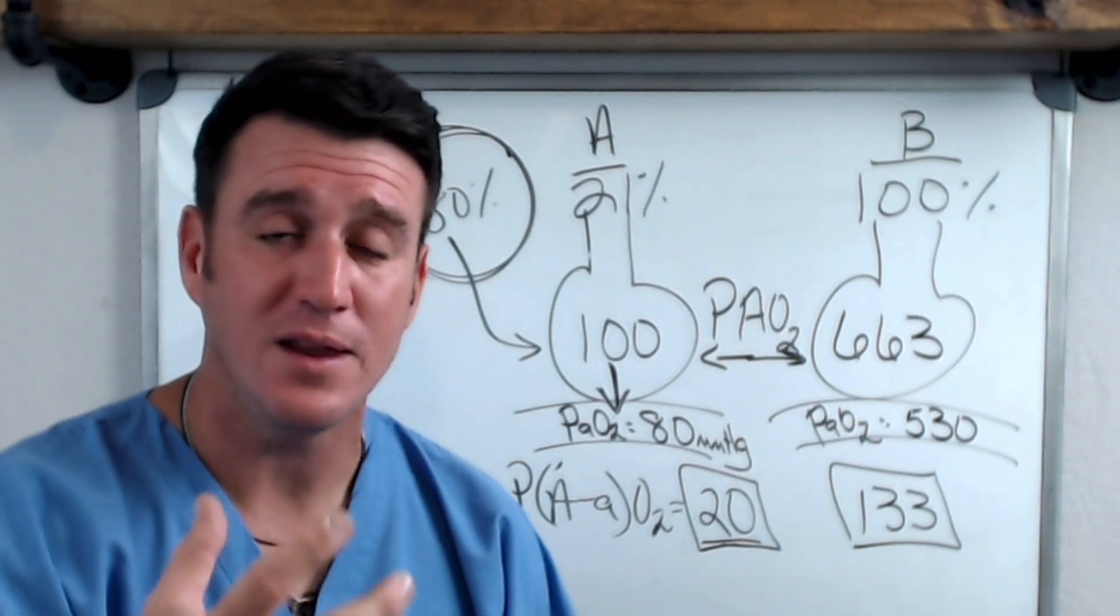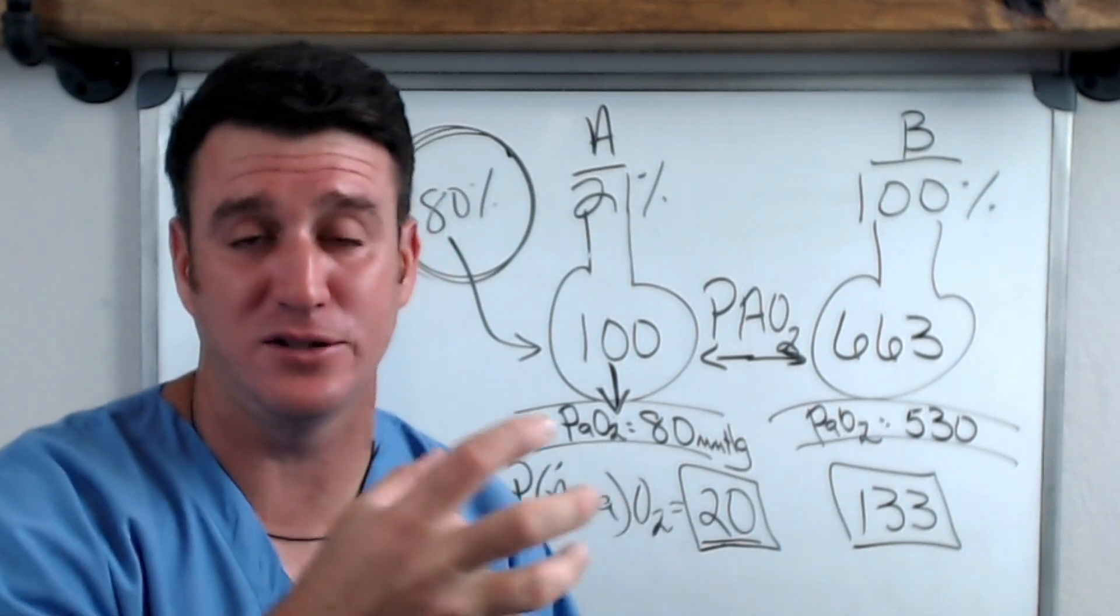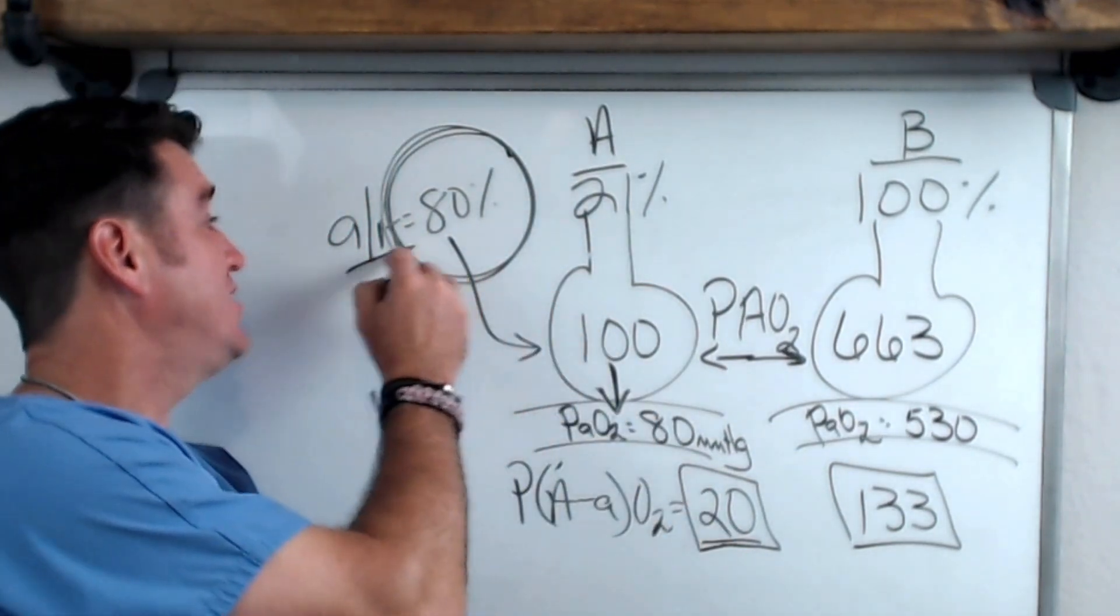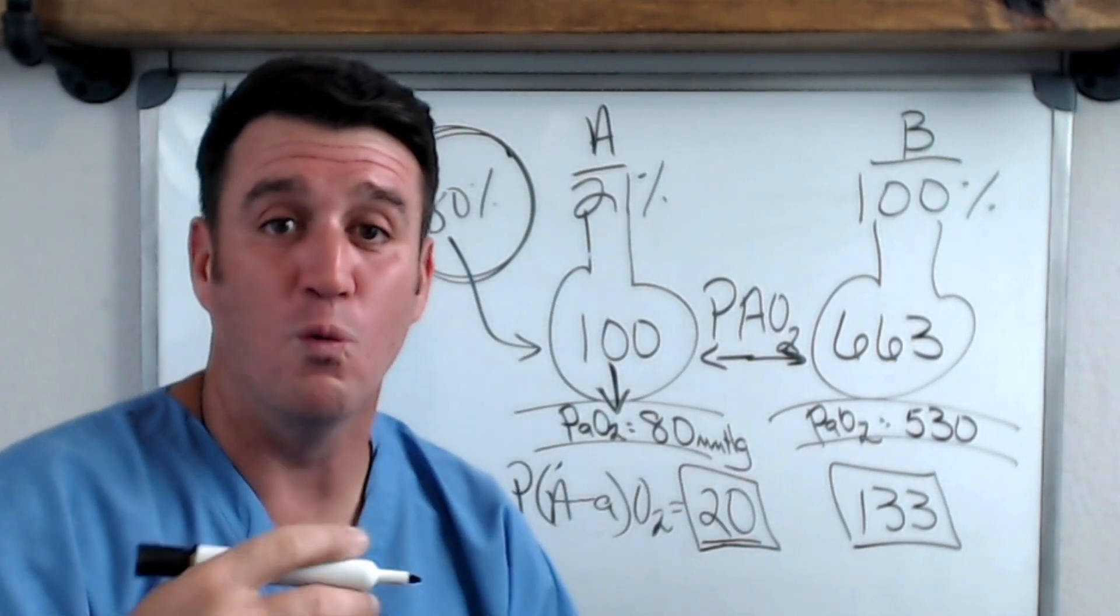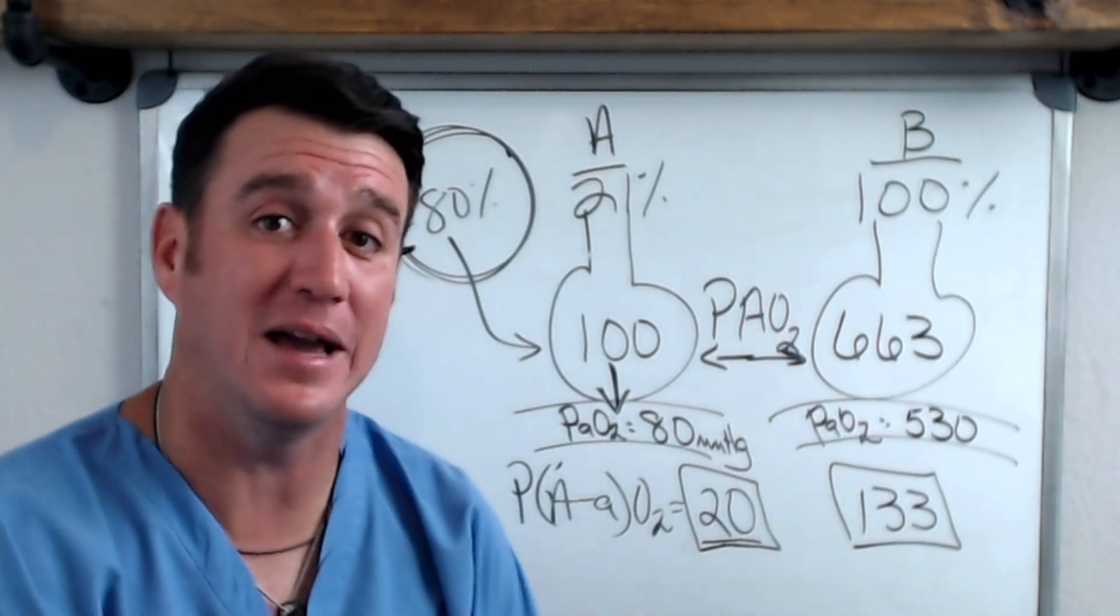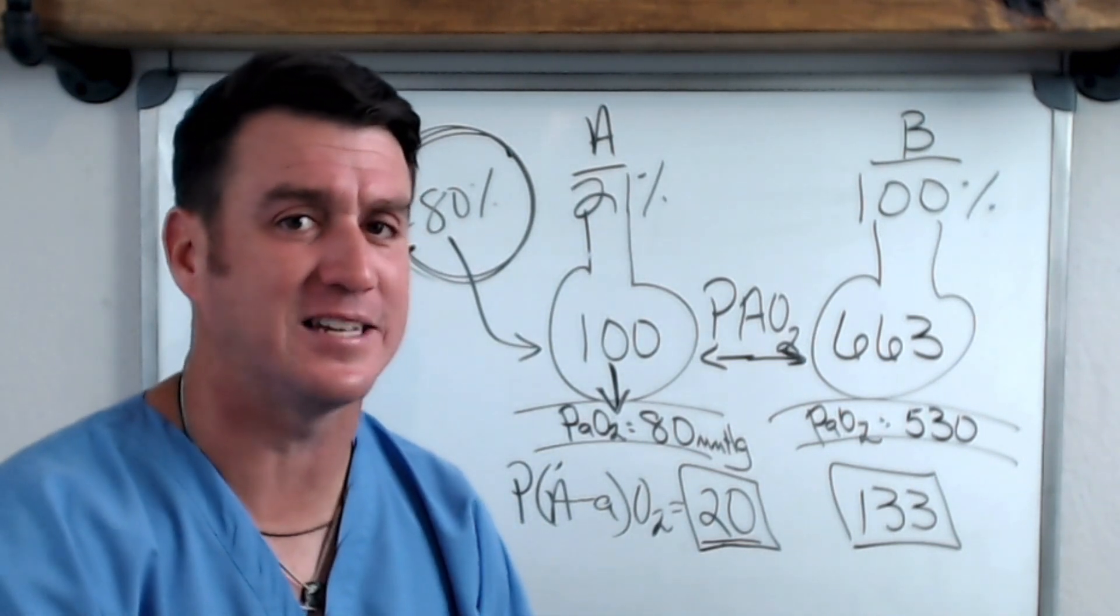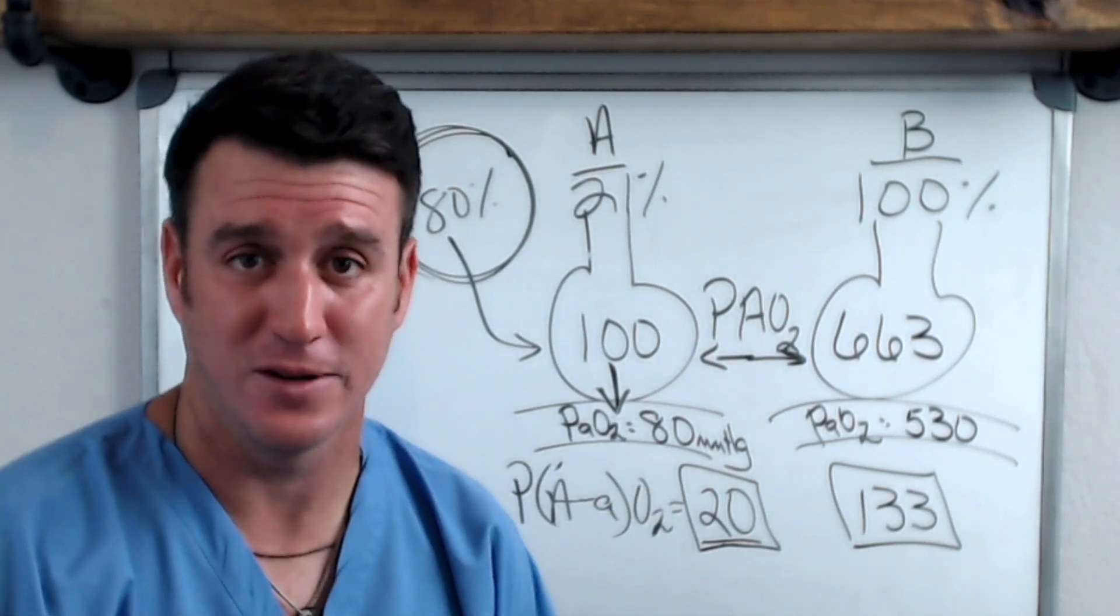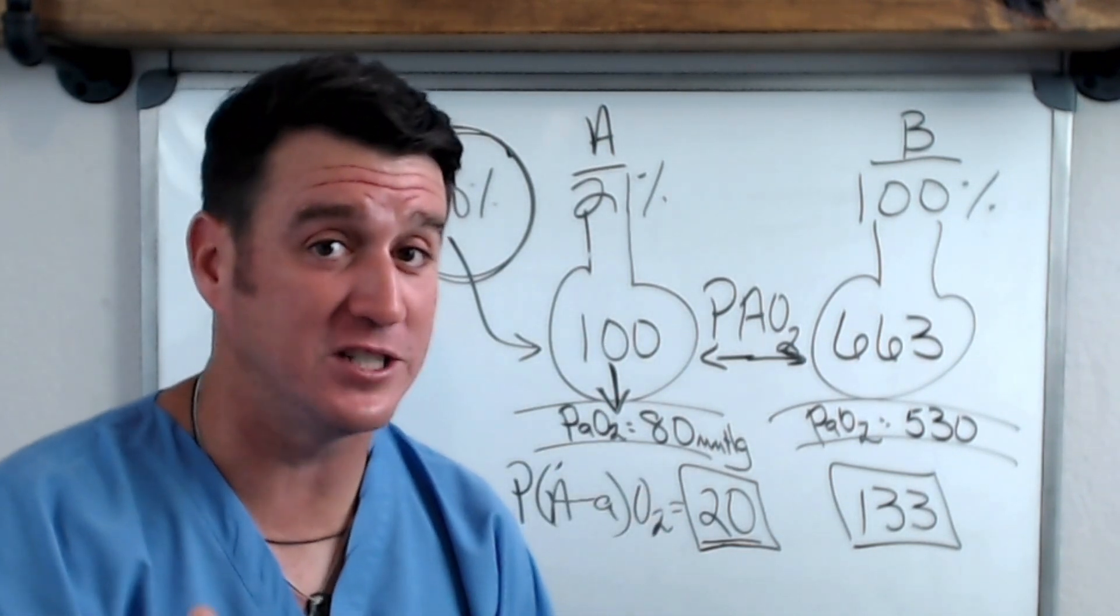And then the A-a ratio will tell you at what percentage of the gas that came into the alveoli actually made its way into - and when I say gas I mean oxygen - made its way into arterial circulation. I hope this helps. If you have any questions, please post them in the comments.